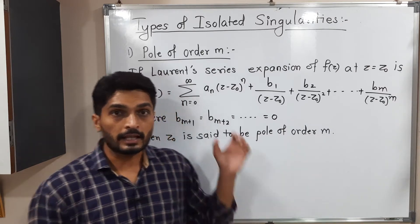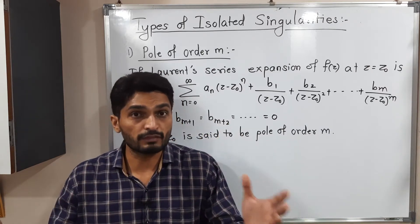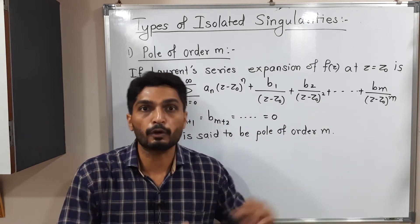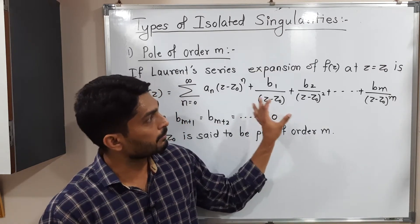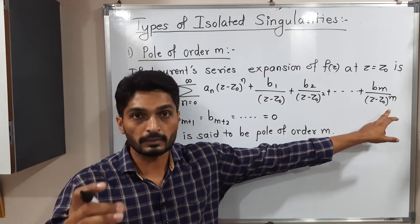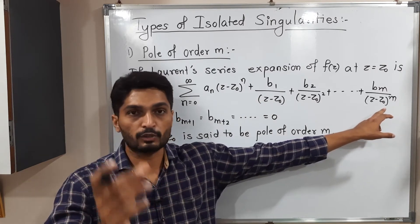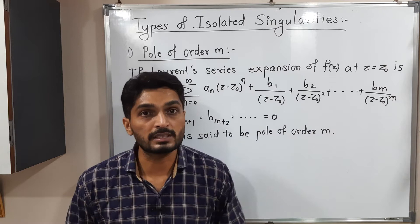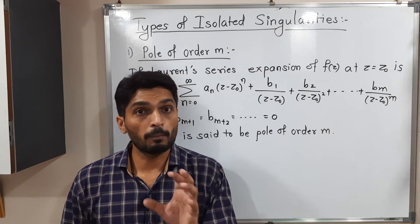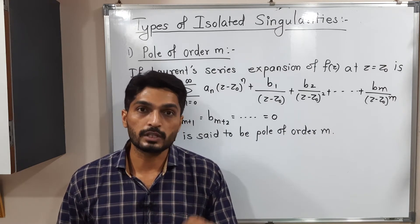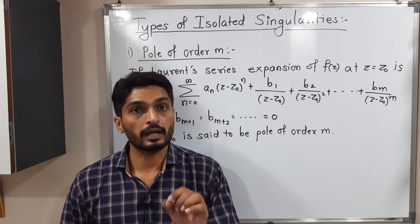Then that z0 is said to be pole of order M. So that means in the analytic part, it may have many terms or infinite terms, but in the principal part, it has finite number of terms. Whatever that term finishes at M, that bracket has power (z - z0) raised to M. Therefore, M is the order of that pole. So z equals z0 is a pole of order M.